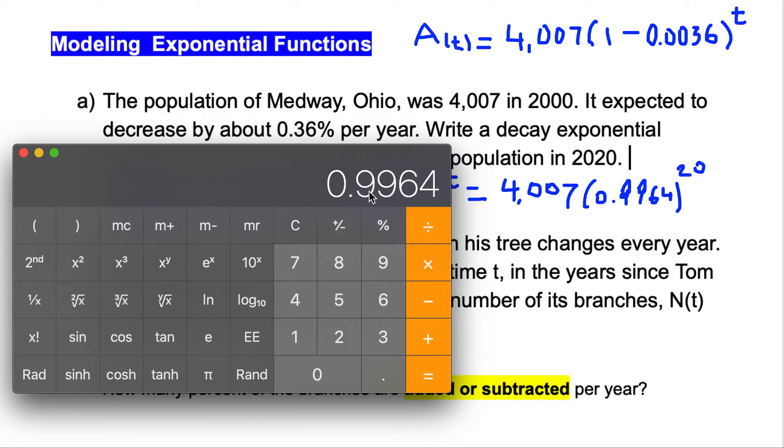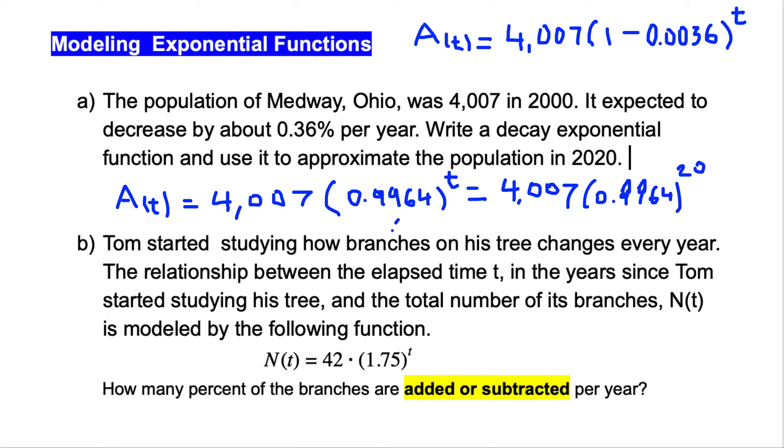I have this number 0.9964, and I'm going to put this in exponent 20. When I calculate, I have 0.93. I multiply this by the initial value which is 4,007, and I get a value of 3,728. After 20 years, the population is going to be equal to 3,728.